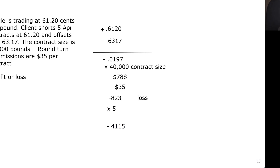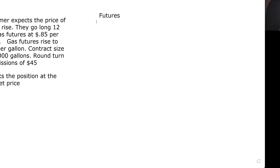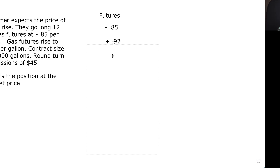We'll do one more. The customer expects the price of gas to rise. They go long 12 December gas futures at 85 cents per gallon. Gas futures rise — he was right — up to 92 cents a gallon. Contract size is 42,000. Round turn commission is $45. Remember, commissions are round turn — they pay all commissions in one shot, not per trade. They offset the position at the market price. The customer buys at 85 cents — that's a negative. Then they sell to offset at 92 cents — that's a positive.